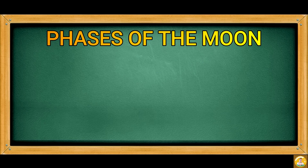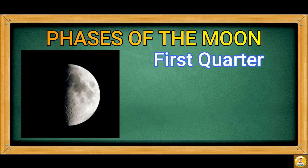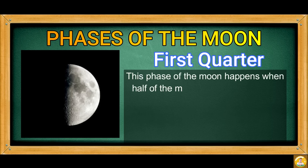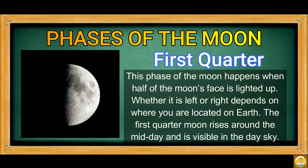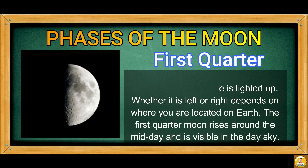Then we have the First Quarter. This phase of the moon happens when half of the moon's face is lighted up. Whether it is left or right depends on where you are located on Earth. The first quarter moon rises around midday and is visible in the daytime sky.